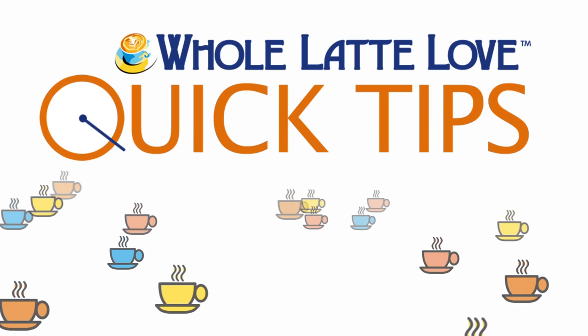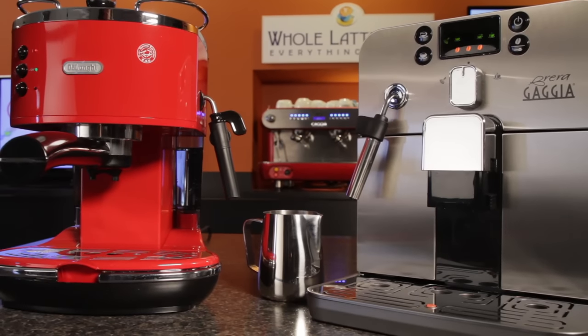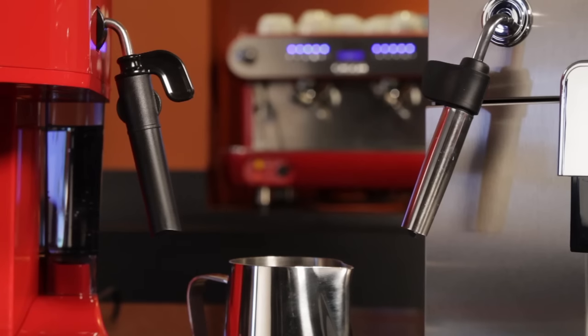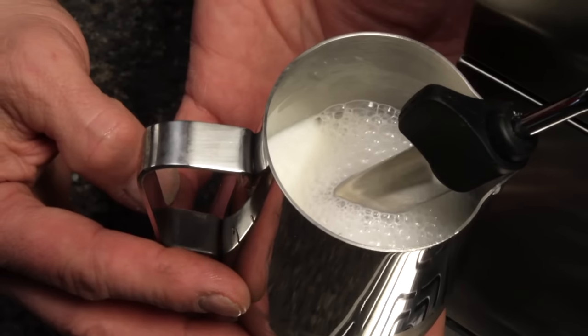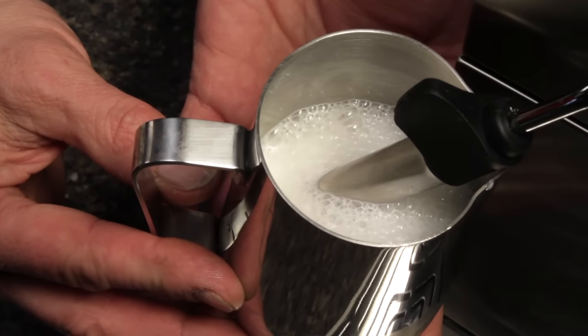Here's another quick tip from Whole Latte Love. If you have an espresso machine with an auto-frothing steam wand, today I'm going to show you how to test it to make sure it's operating properly, plus I've got an easy way for you to learn how it works that's sure to get you a better milk froth.